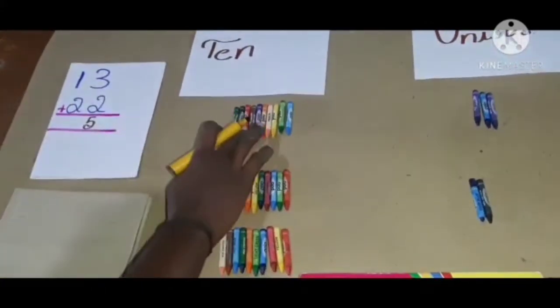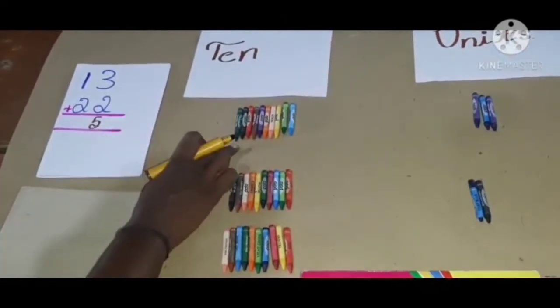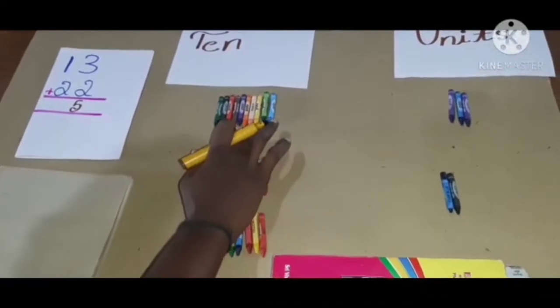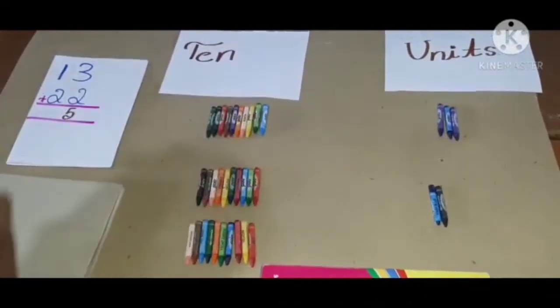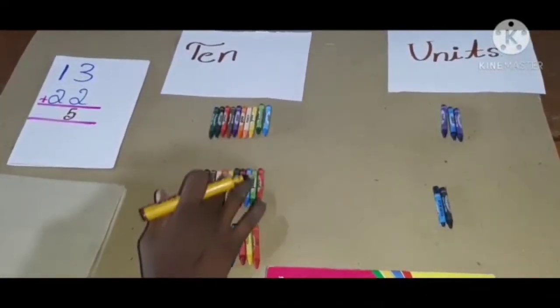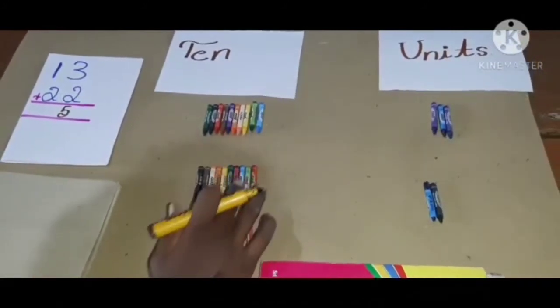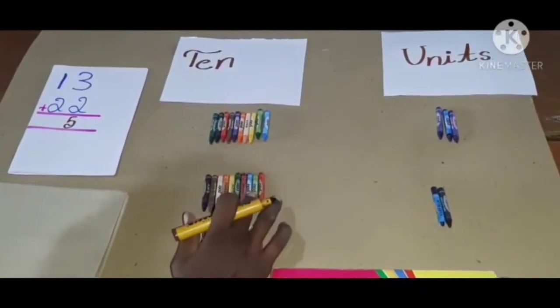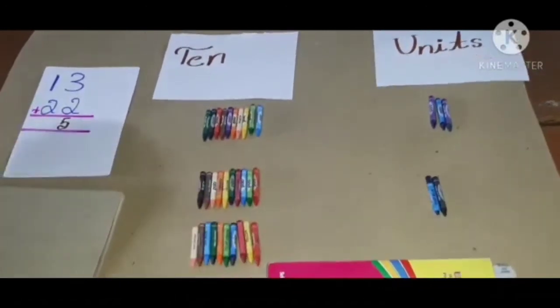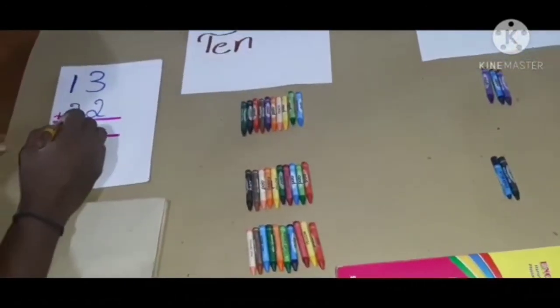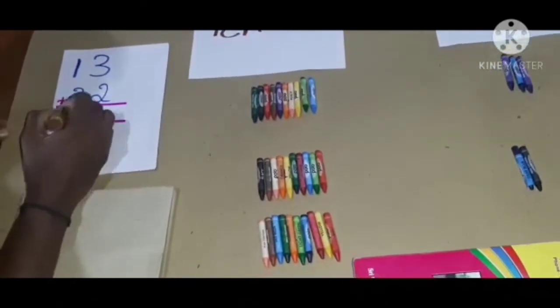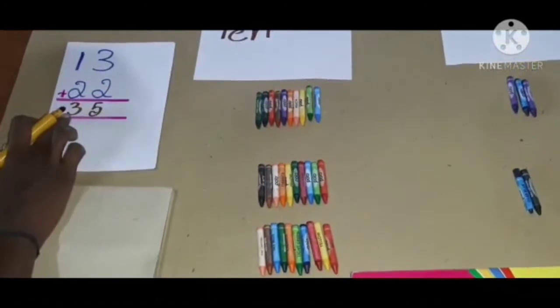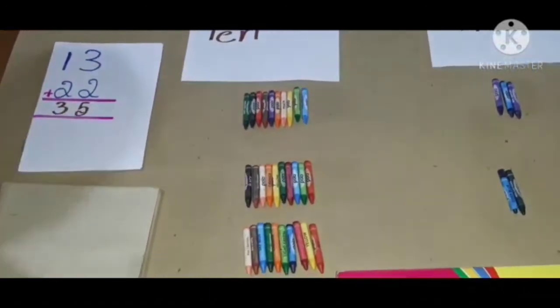Next, count tens. Here 1 ten and here 2 tens. Each line 10 crayons. So 1 plus 2: 1, 2, 3. 3 tens, 30. 1 ten, 2 tens, 3 tens. So 1 plus 2, 3. Total 35. 3 tens and 5 units.